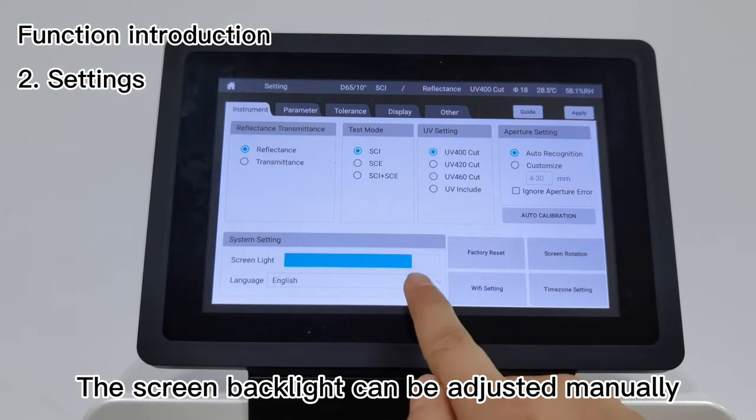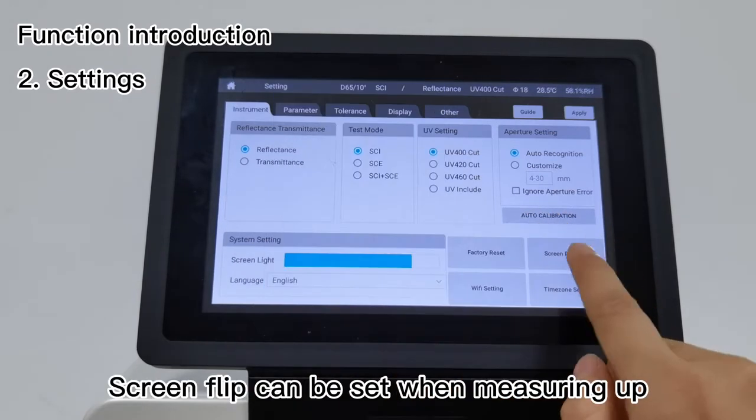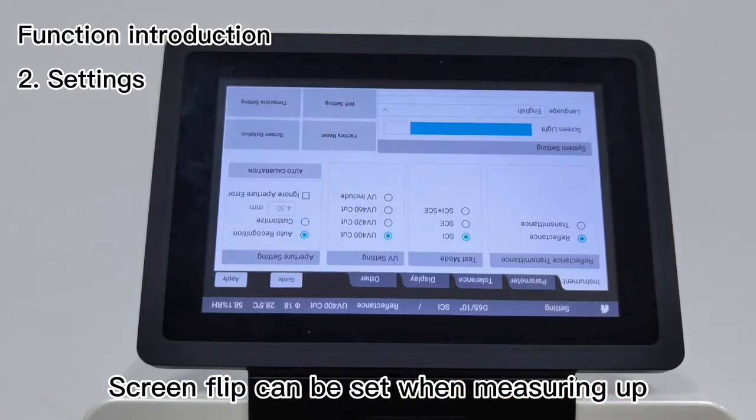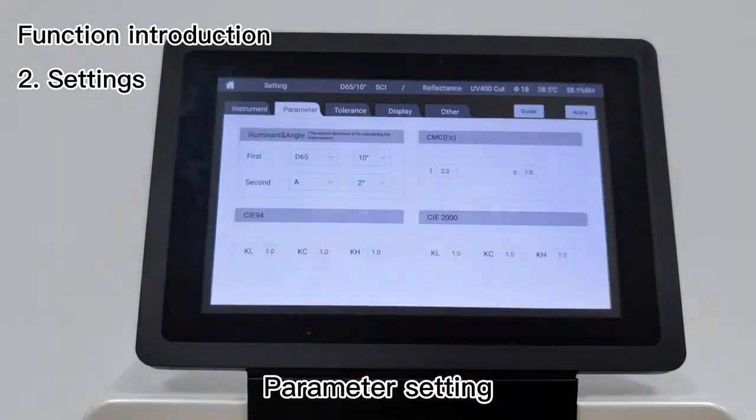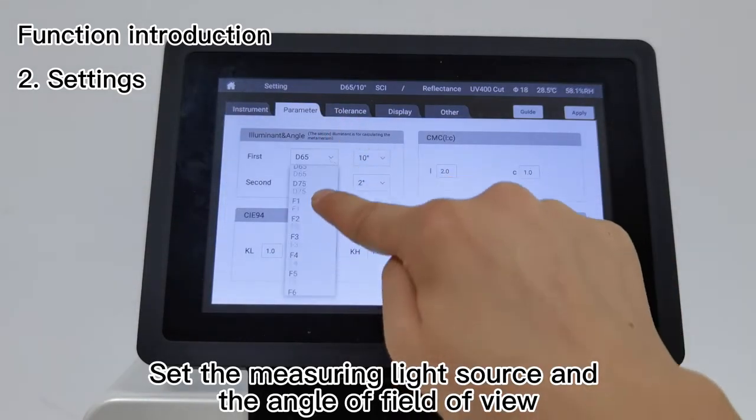Set language, screen flip can be set when measuring up. Parameter setting allows you to set the measuring light source and the angle of field of view.